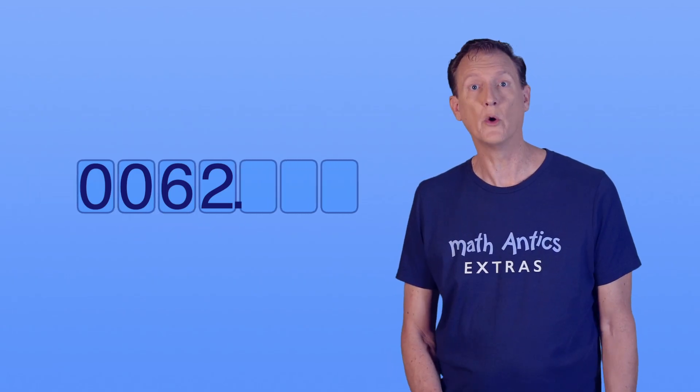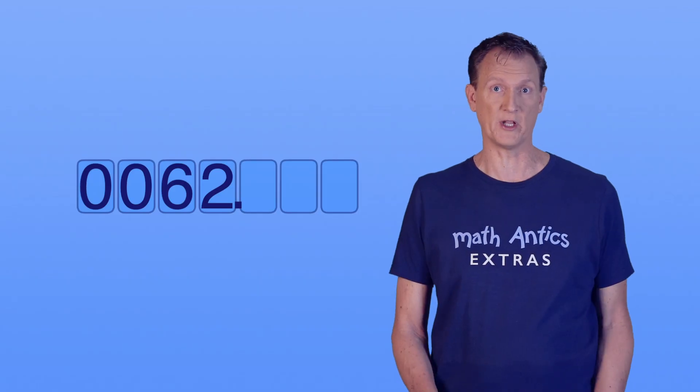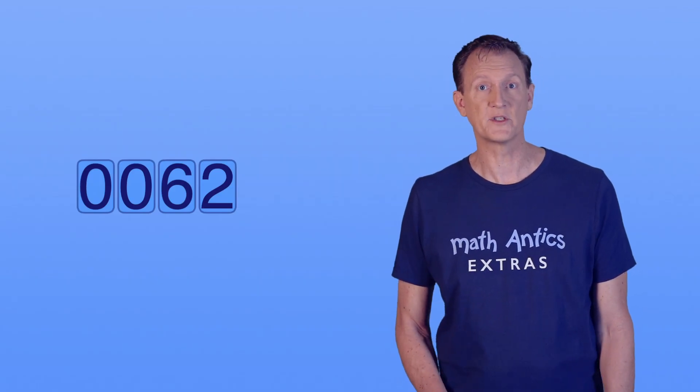And since we don't have any decimal digits, we can get rid of our decimal point and the decimal number places. There. Now our number is 0062.